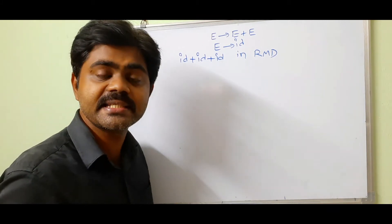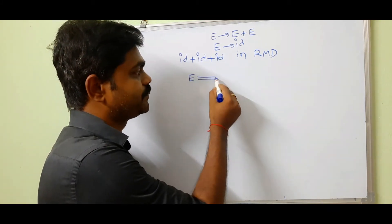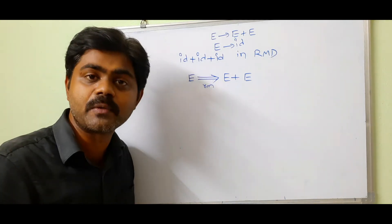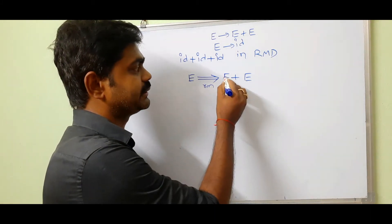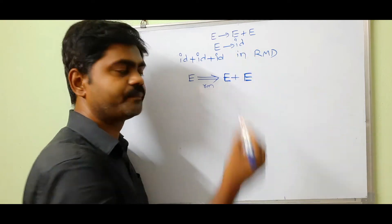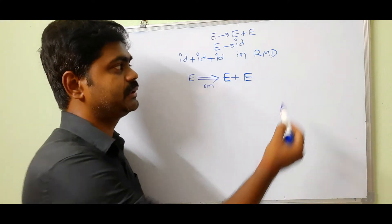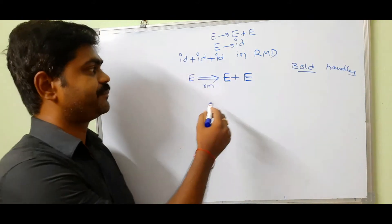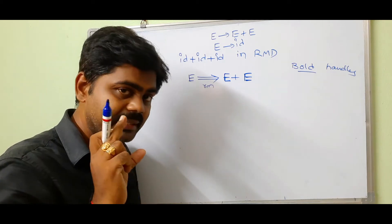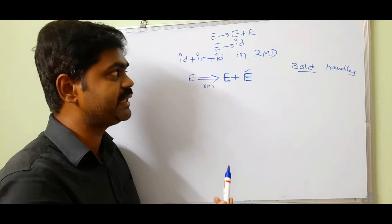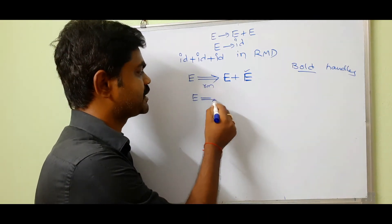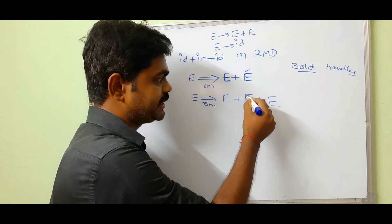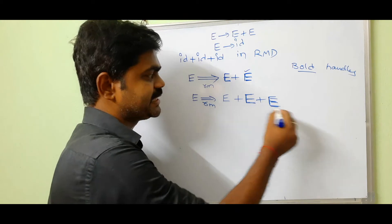Let's start with the first production E → E plus E. We write E derives (rm) E plus E — the bold part here represents handles. Since this is rightmost derivation, we focus on the rightmost E. In its place, I write E plus E again, making these two bold. Now this E plus E becomes our handle. Then in place of the rightmost E, I substitute ID, giving E derives (rm) E plus E plus ID, and make ID bold as our handle.